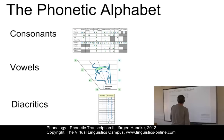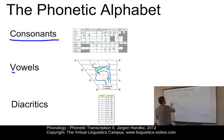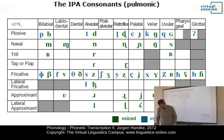The International Phonetic Alphabet can be subdivided into the following components: a set of consonants, a set of vowels, and diacritics. Let's look at them in more detail.